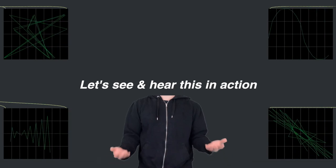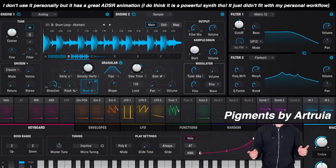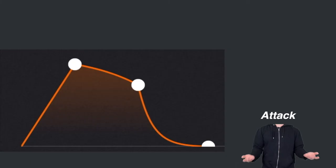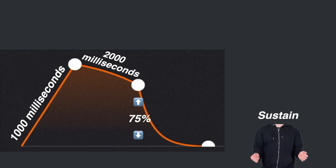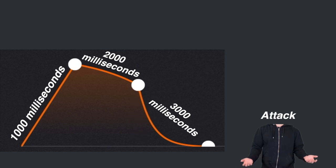Okay, let's see and hear this in action. I'll demonstrate it on a synth called Pigments by Arturia. Let's set the attack time at 1000 milliseconds, which is equal to one second. Let's set the decay time at 2000 milliseconds or two seconds. And let's set the sustain level at 0.75, so it is 75% loud compared to the peak, which is at 100%. And let's set the release time as three seconds.